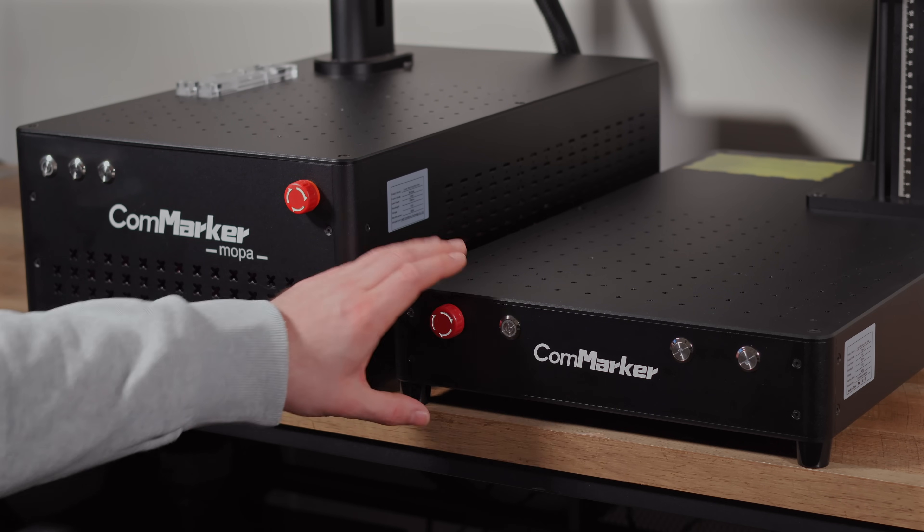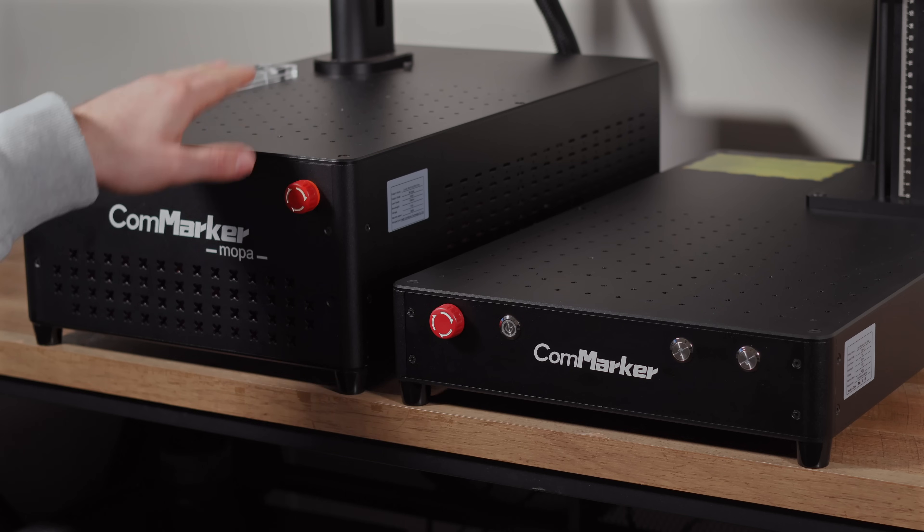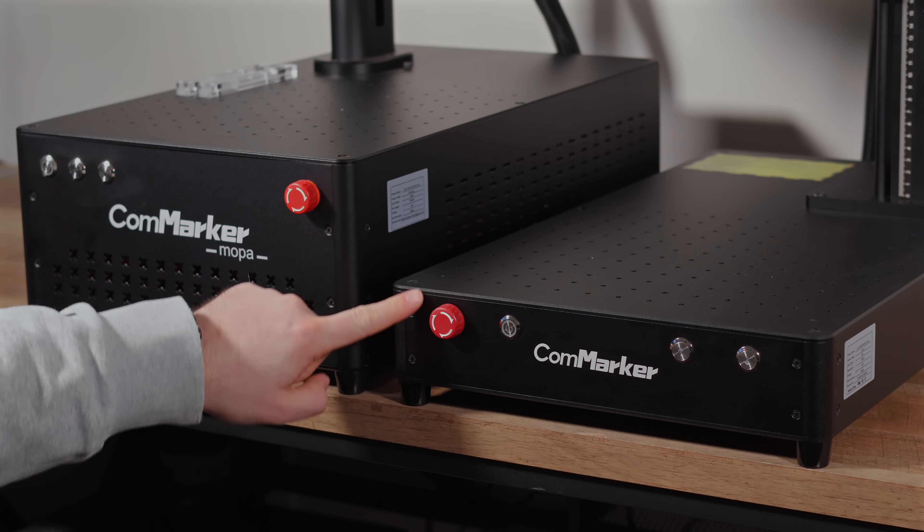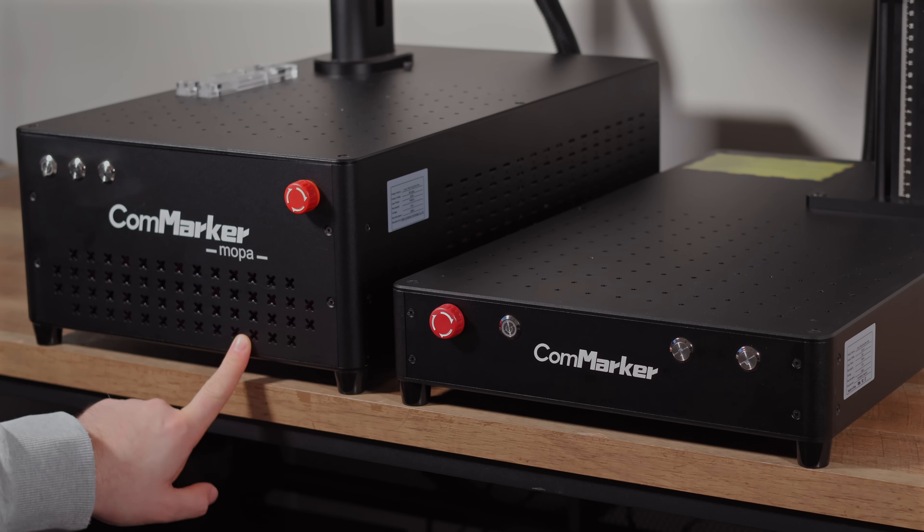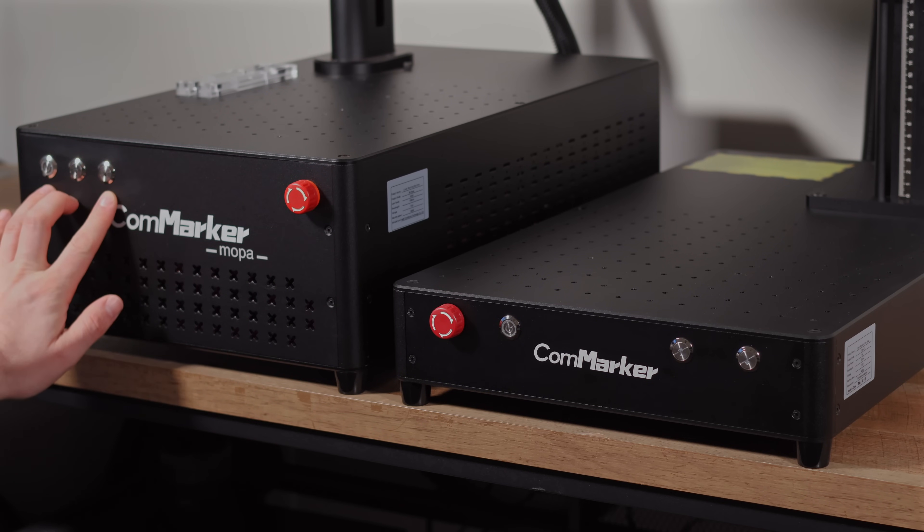Like most of the CommMarker machines, the Omni-1 is designed with three main parts, starting with the base. Here, we've placed it side-by-side with the B4 for comparison. As you can see, the Omni-1's height is about half that of the B4, making it a more compact option.